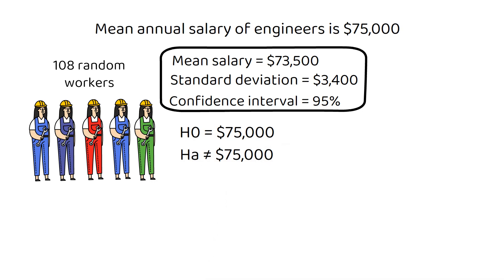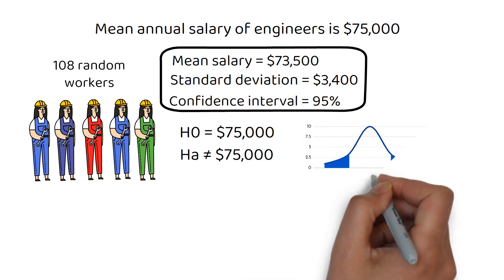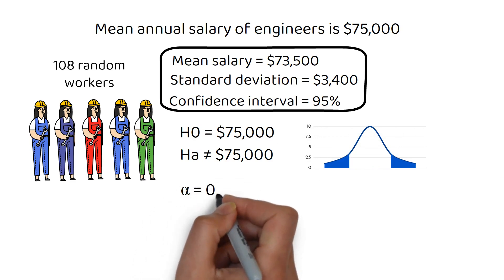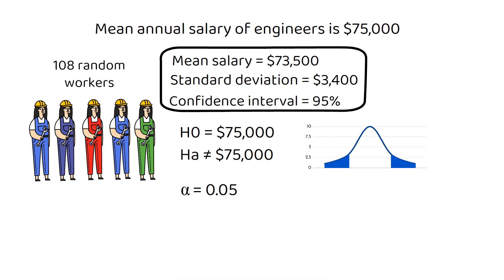Note that, unlike the previous example, this is a two-tailed test, since we're just asking whether the estimate is wrong. It can be wrong in either direction. For a 95% confidence interval, the significance level, alpha, is 0.05 or 5%.